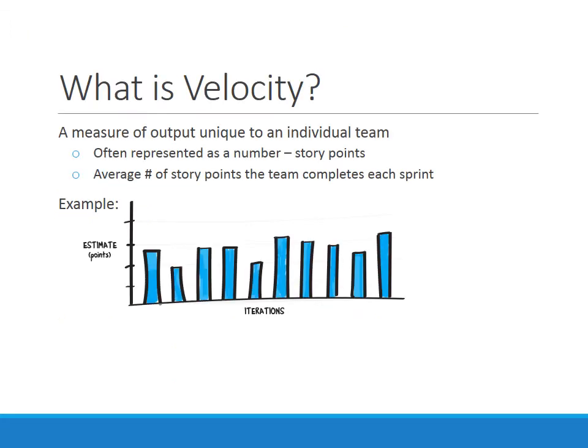What is velocity? It's simply a measure of output unique to an individual team. It's often represented as a number, like story points — the average number of story points the team completes each sprint. In this example, we have a chart showing that the team is doing a certain number of story points each iteration or sprint, and there's some fluctuation there.